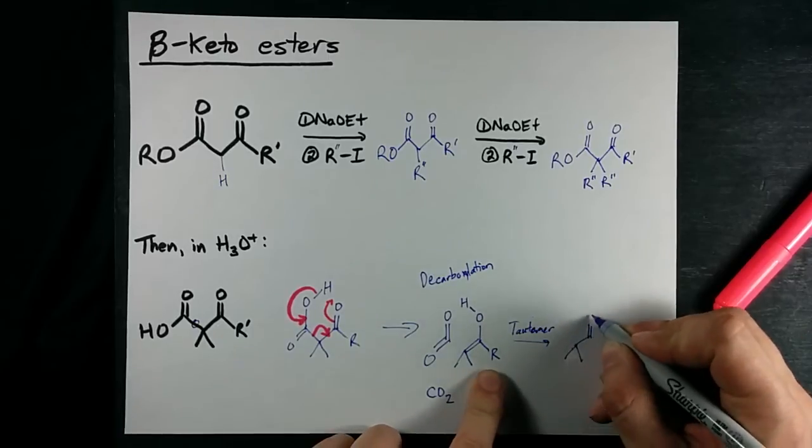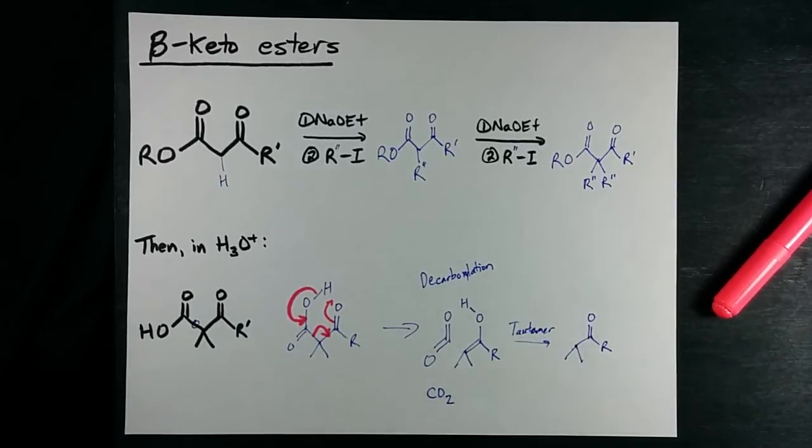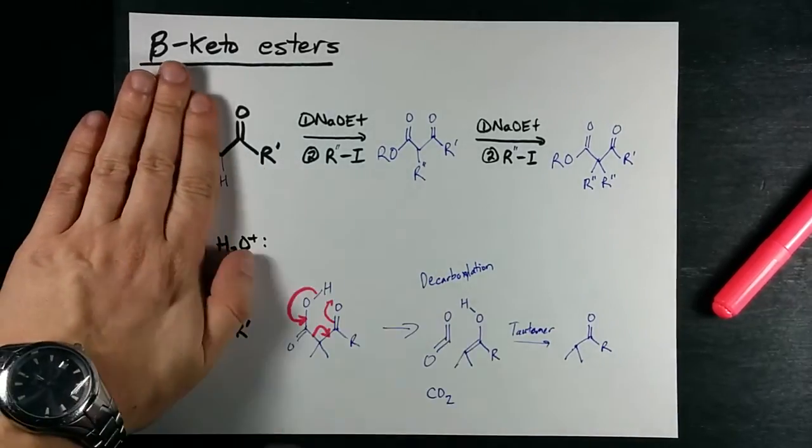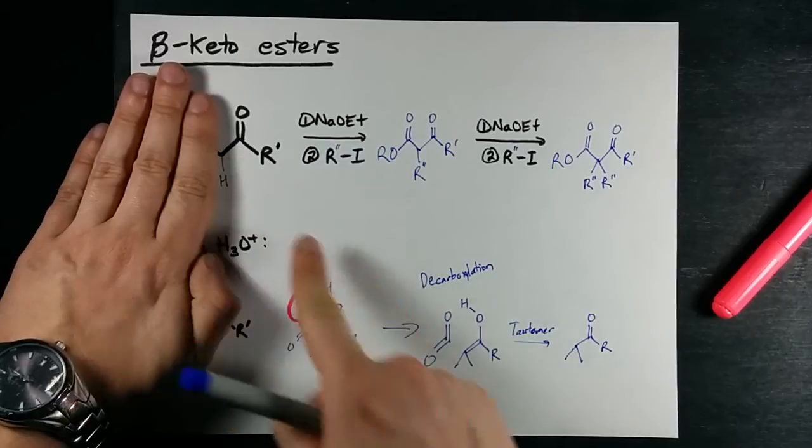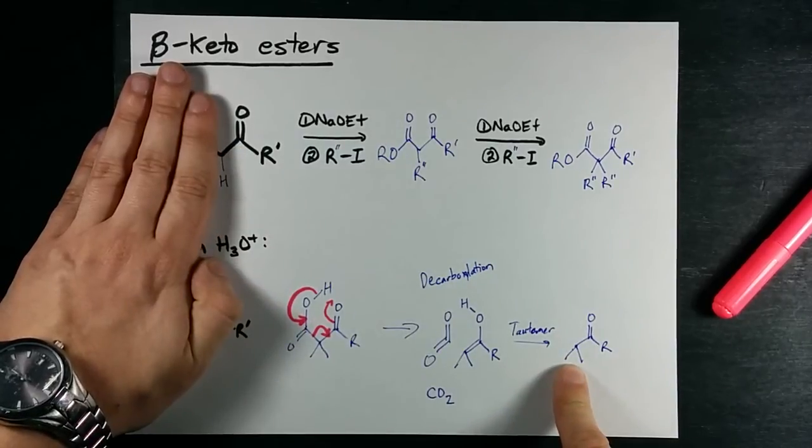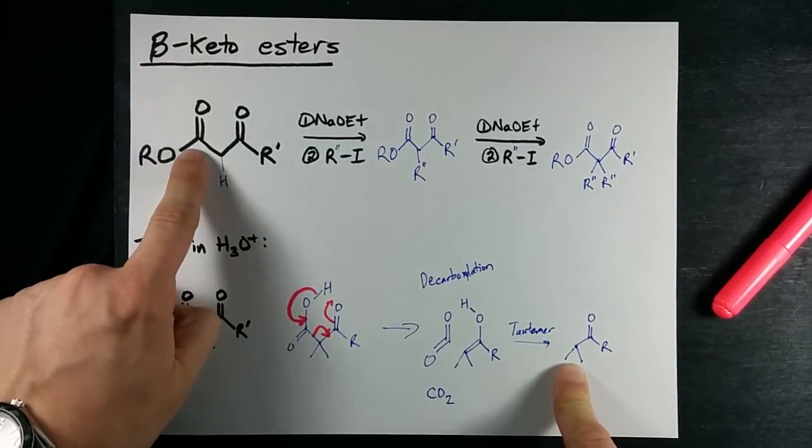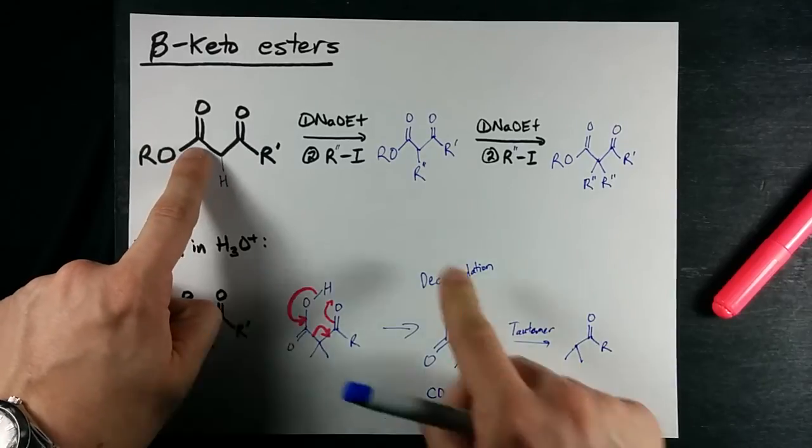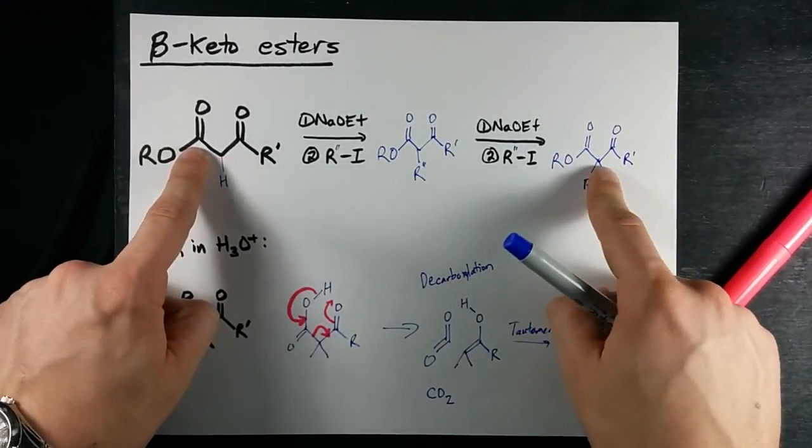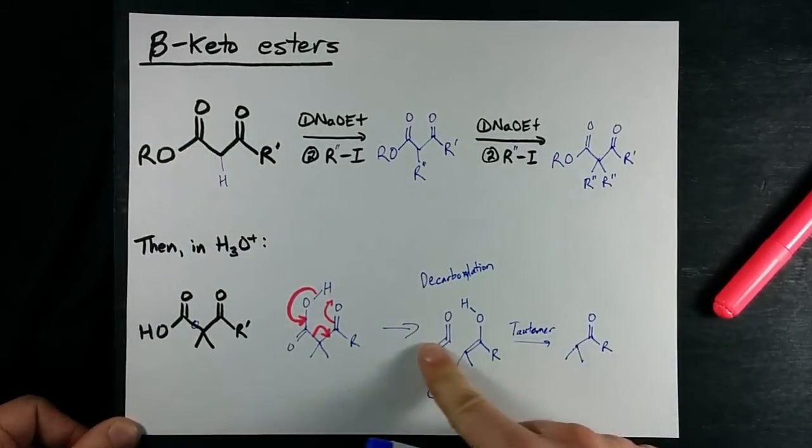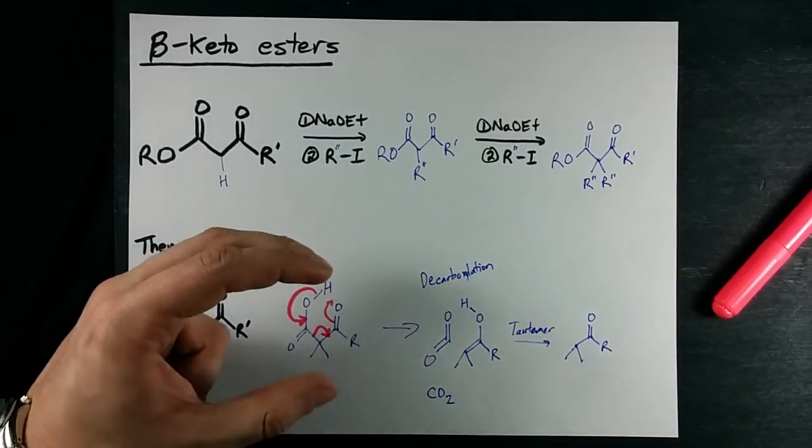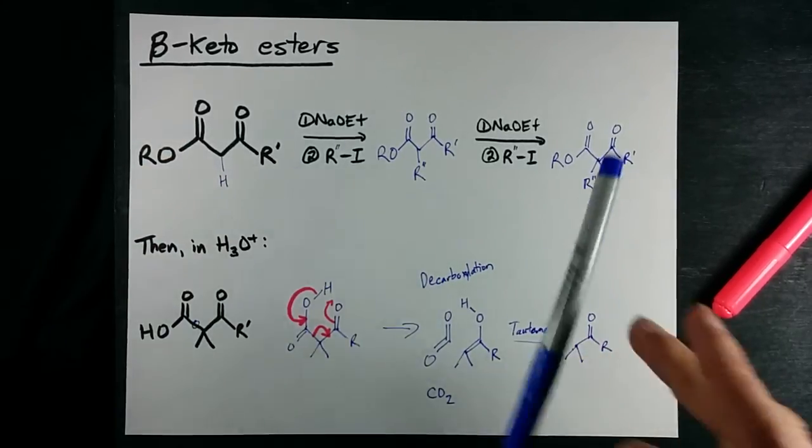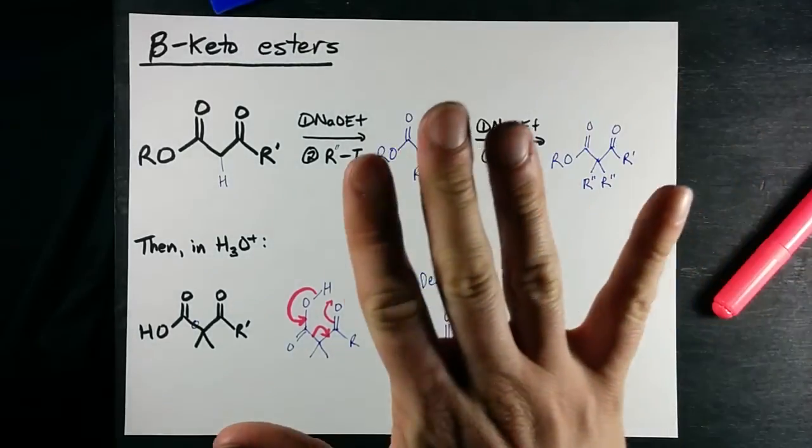So what we have ended up with is simply a ketone, similar to what we started with but double alkylated. And it was the beta keto ester functional group that helped us do that double alkylation, and decarboxylation was the mechanism to remove CO2 and leave us with the double alkylated ketone.